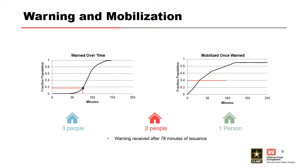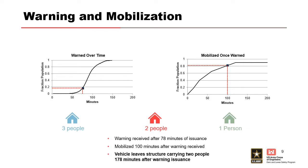Then we sample the mobilization curve to identify when they would mobilize once they receive that warning. The scenario LifeSIM simulates for this structure: two people will leave 178 minutes after the warning is issued. If the warning is issued four hours in advance, they have a good chance of getting out. However, if the warning is issued relatively close to the hazard event, they may not get out in time, or they may get caught on the road.